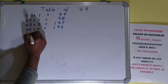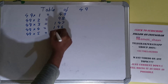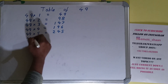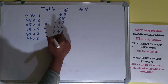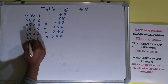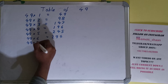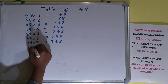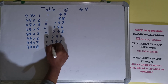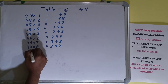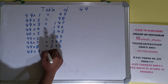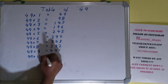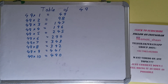49 into 5 is 245, 49 into 6 is 294, 49 into 7 is 343, 49 into 8 is 392, 49 into 9 is 441, and 49 into 10 is 490. Okay, so that's the table of 49.